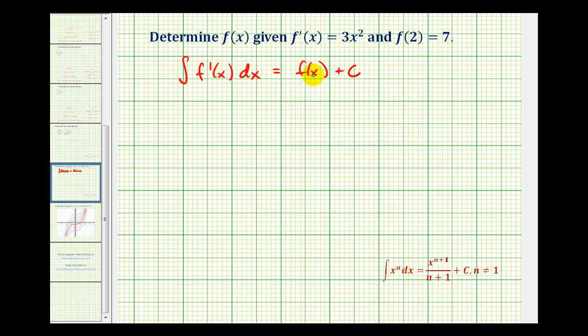This function here will have a derivative of f'(x). So from the given information, the indefinite integral of 3x² with respect to x would be equal to our function plus a constant. And then we can determine the constant because we're given f(2) equals 7.